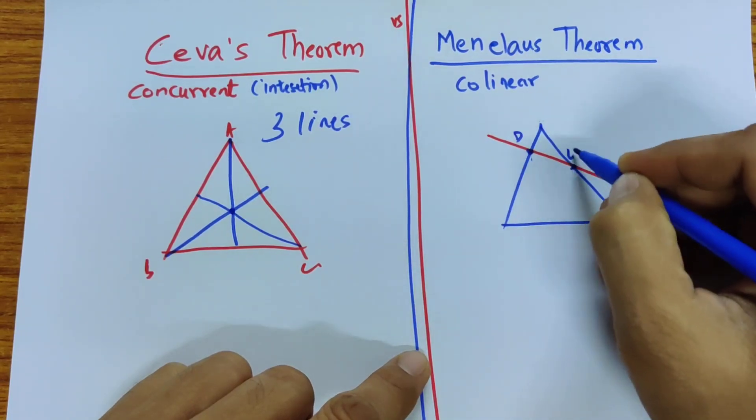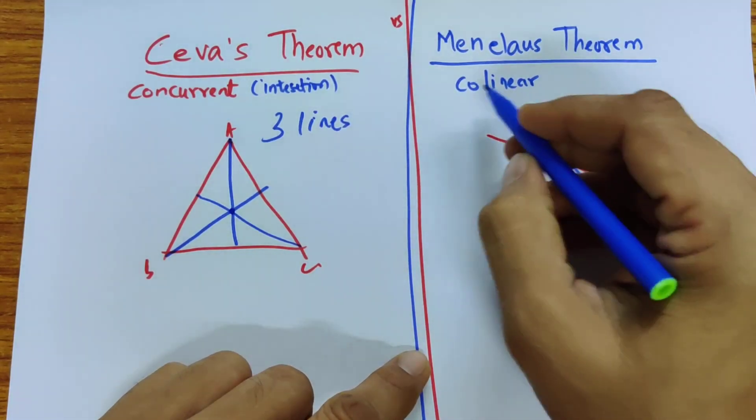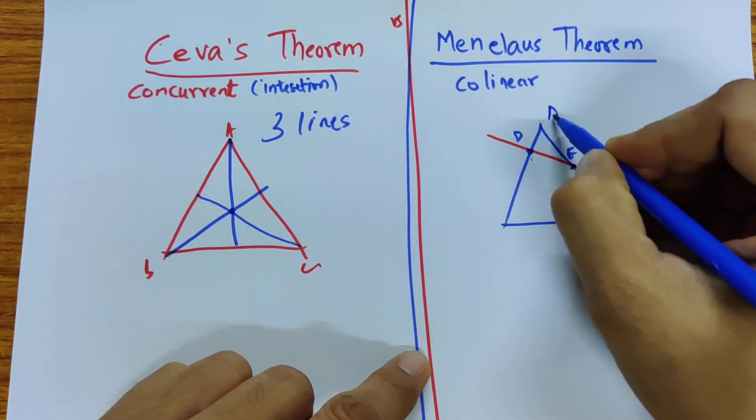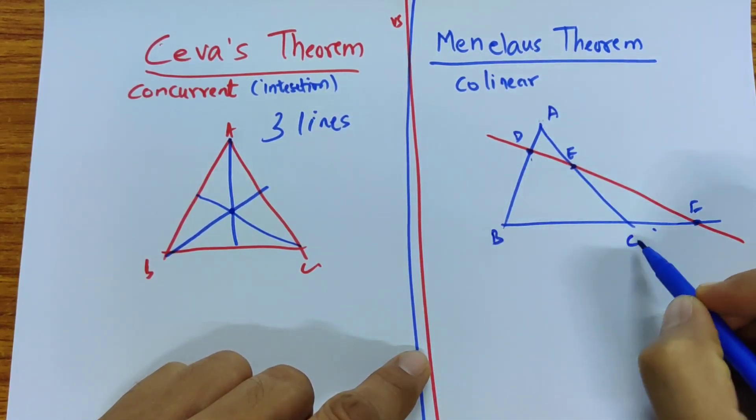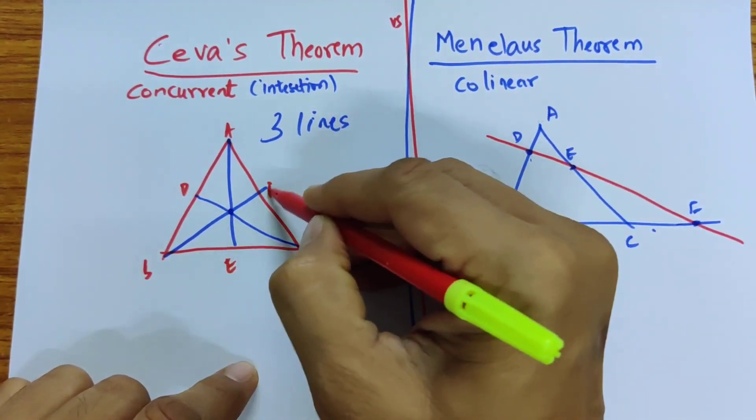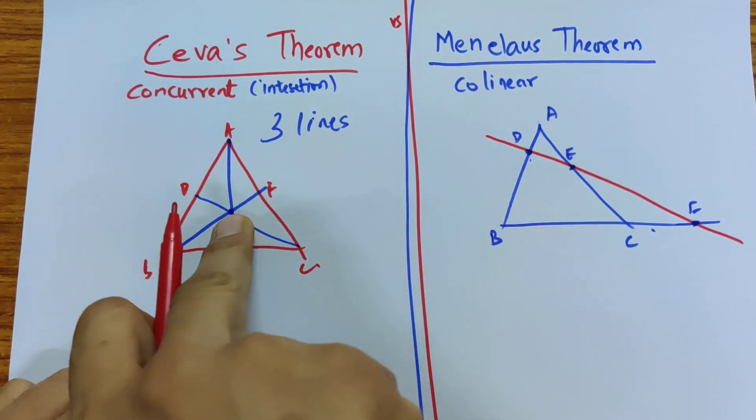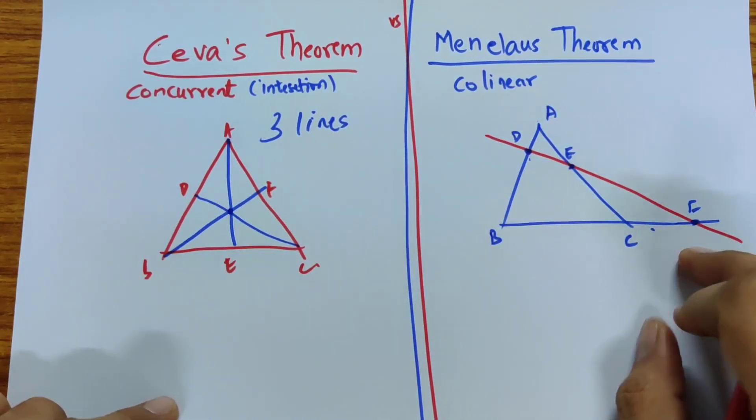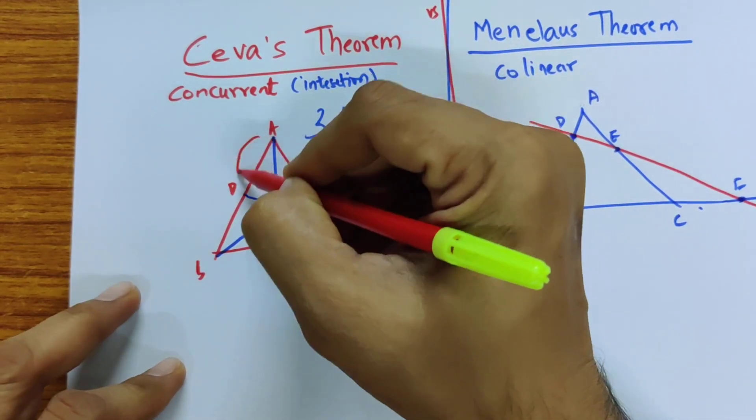D, E, F being collinear in one line. Okay. And I of course have A, B, C. Here also I have D, E, F. This is generally the reason for the confusion. But there is no one point where they intersect. These three are in a line. That's what this is about.